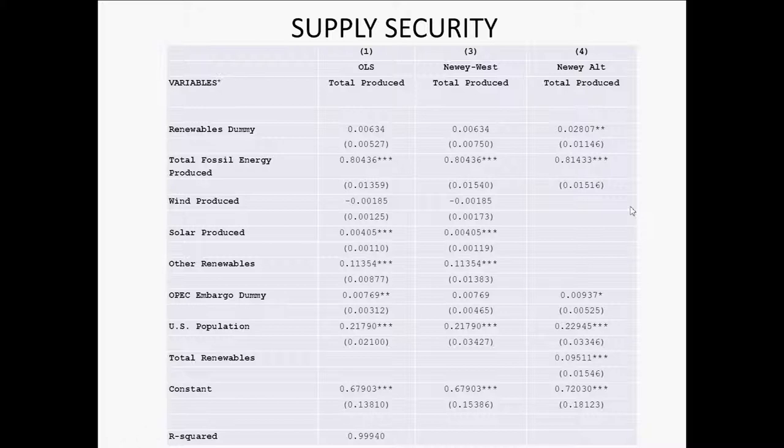Replacing wind, solar, and other renewables with the aggregate variable total renewables significantly reduces VIF to 7.26 — below the threshold of 10. Models 2 and 3 address autocorrelation by using Newey-West estimates instead of OLS. On average, holding everything else constant, our data provides sufficient evidence to reject the null hypothesis in favor of the alternate — energy diversity does have an impact on supply-side security. In Model 3, where renewables are aggregated and Newey-West estimates are used, the renewables categorical variable becomes statistically significant.